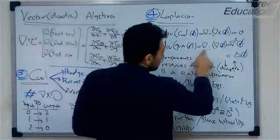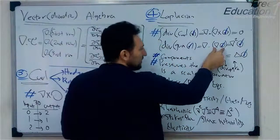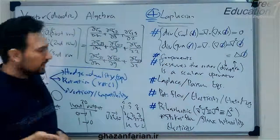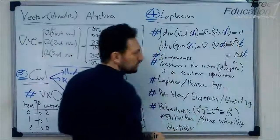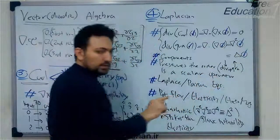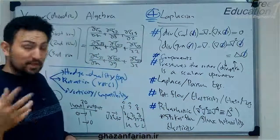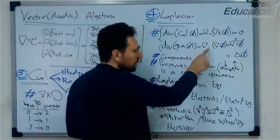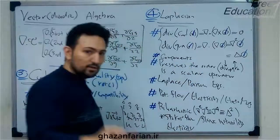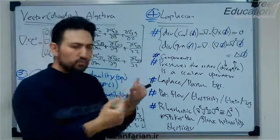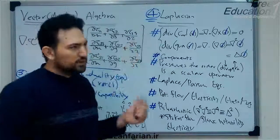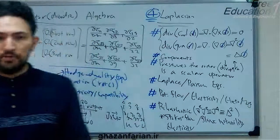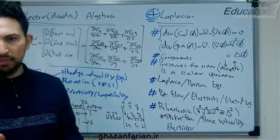We can show the divergence as the dot product, the contracted product of the gradient of something. This is the dot product of two del operators, shown as del-squared or the Laplacian operator, which is a scalar. The del operator is of order one as a vector, and its dot product reduces the result by two. So one plus one is two, and two minus two is zero, meaning the Laplacian operator is a scalar operator that preserves the order of its input quantity.